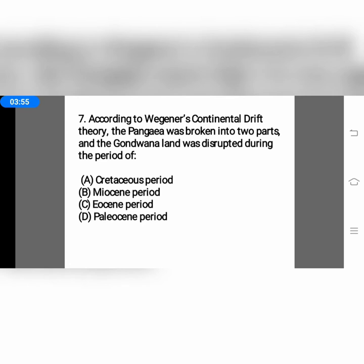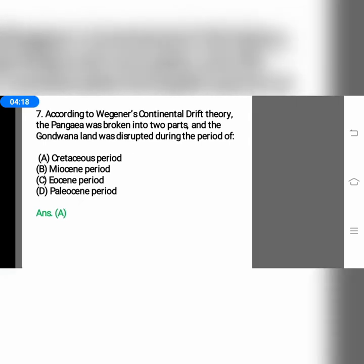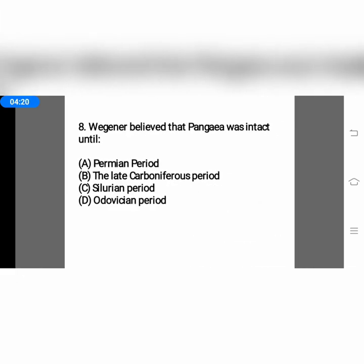Question number seven: according to Wegener's continental drift theory, Pangea was broken into two parts and Gondwana land was disrupted during the — option A, Cretaceous period; option B, Eocene period; option C, Miocene period; or option D, Paleocene. The answer is option A, the Cretaceous period.